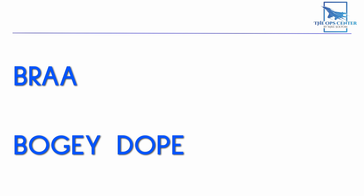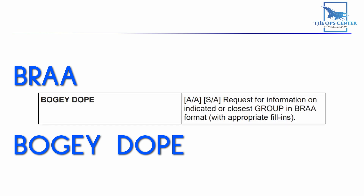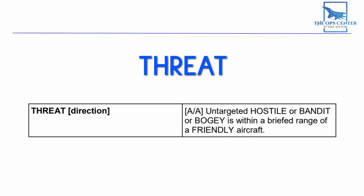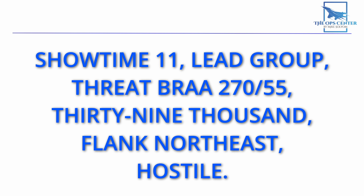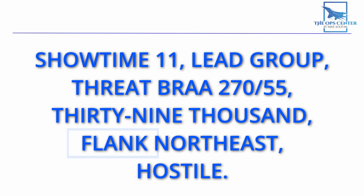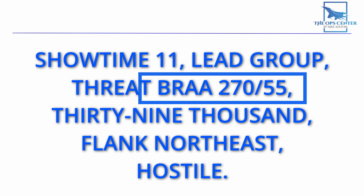BRA is simply a request for directions to a specific air contact in BRA format. Bogey Dope is a request for information on the indicated or closest group in BRA format. BRA format is also used when a controller is reporting a threat — this happens whenever an untargeted hostile, bandit, or bogey is within a brief range of a friendly aircraft. So Showtime 1-1 would know there is a threat directly west, 55 miles away, flying northeast and showing its flank, and confirmed as hostile. Since this information is directly relevant to Showtime 1-1, the BRA format is used instead of bullseye.